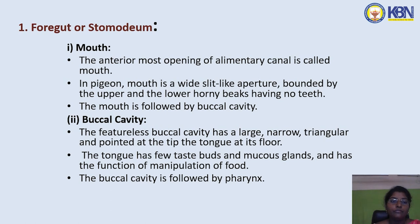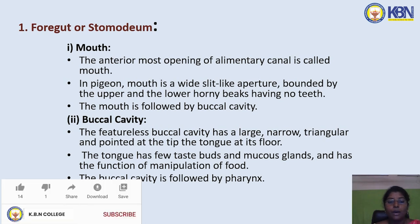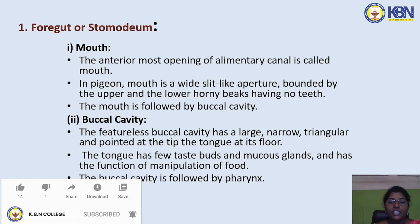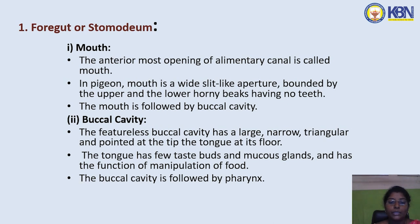In the foregut or stomodeum, the mouth is the anterior-most opening of the alimentary canal. In the pigeon, the mouth is a wide slit-like aperture bounded by the upper and lower horny beaks, having no teeth. The mouth is followed by the buccal cavity. The featureless buccal cavity has a large, narrow, triangular, and pointed tongue at its floor.